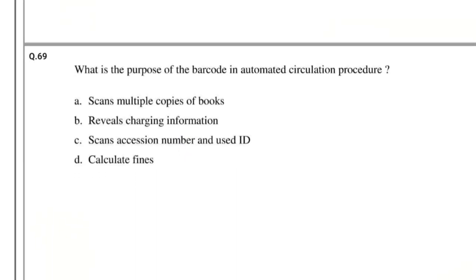Question number 69: What is the purpose of the barcode in automated circulation procedure? Options: Scans multiple copies of books, Reveals charging information, Scans accession number and user ID, Calculate fines. The answer is: Scans accession number and user ID.